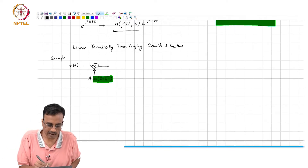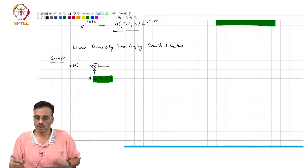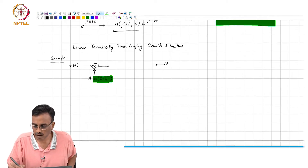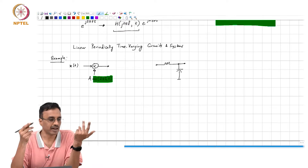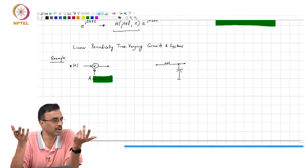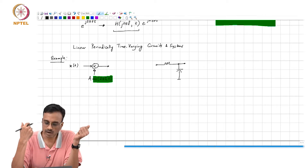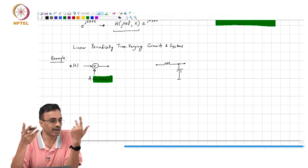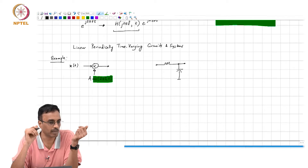So this is an example — perhaps a trivial example because there is no memory at all in the system. It is entirely possible to complicate our lives by having elements with memory. Just as linear circuits with only resistors and no capacitors or inductors would be useless, a linear periodically time varying circuit with only time varying resistors would probably not be very useful.